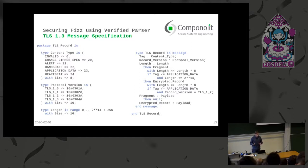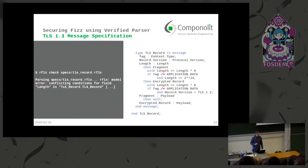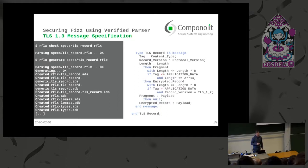What makes it more complicated is that we differentiate whether you have a plaintext payload or an encrypted payload. When we check the specification, we see there's an inconsistency: we have two conditions which check if the tag is not equal to application data, and as these appear in two branches — the two possibilities for encrypted and plaintext payload — it's not clear which path the parser should take. The resulting parser would not be deterministic. So we have to remove this inconsistency, and after fixing it the tool confirms the specification is correct, and we can generate code from it.